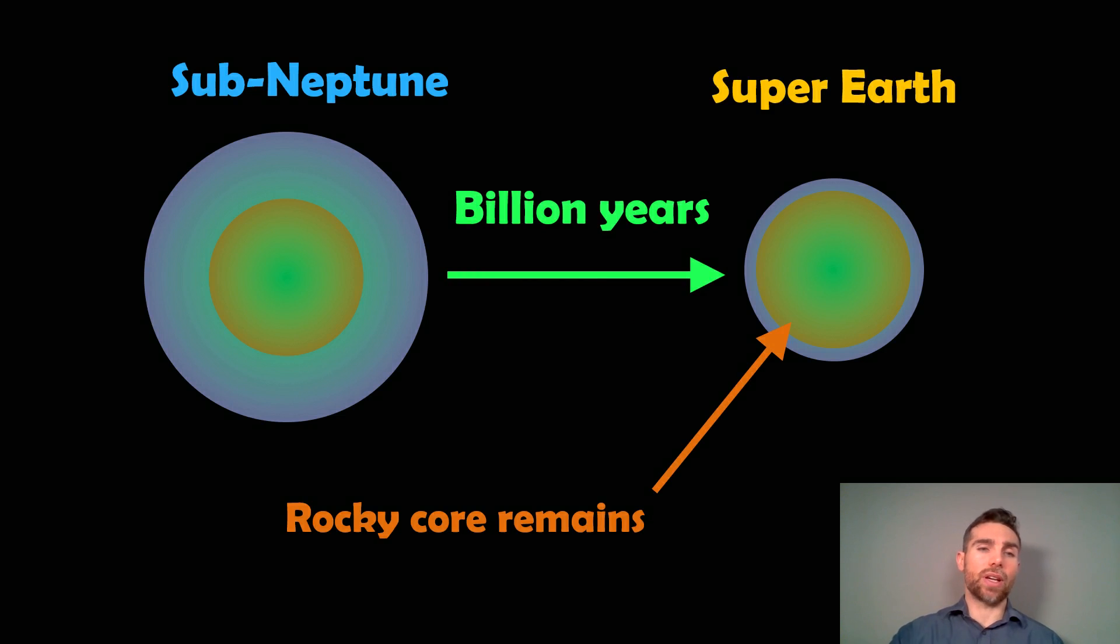So you end up where you get a sub-Neptunian planet, and billions of years later, you will likely get a super-Earth instead. Now, the rocky core, which is assumed to be in sub-Neptunian planets, remains as it was. It just loses its outer atmosphere, which then makes it shrink down. So this is what we think is happening, or why we're getting a transition from one to the other, and what causes that radius valley.